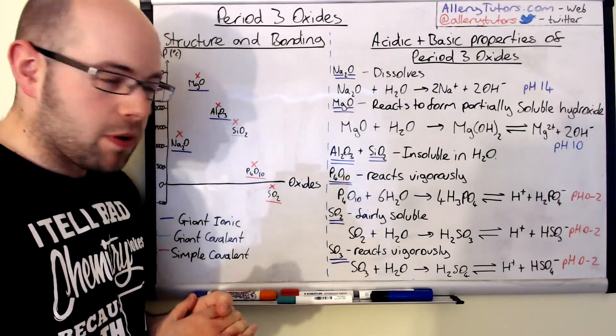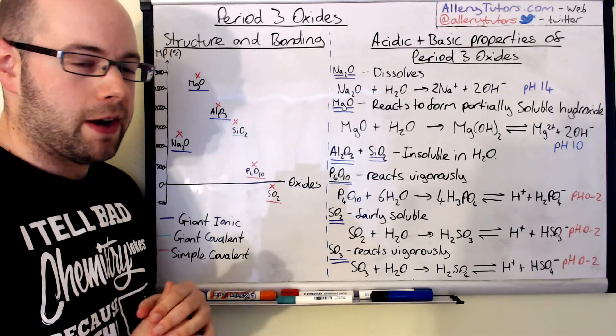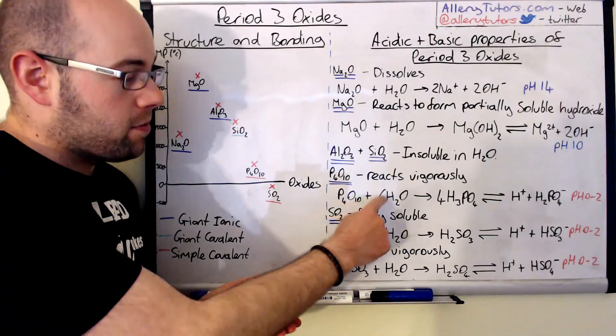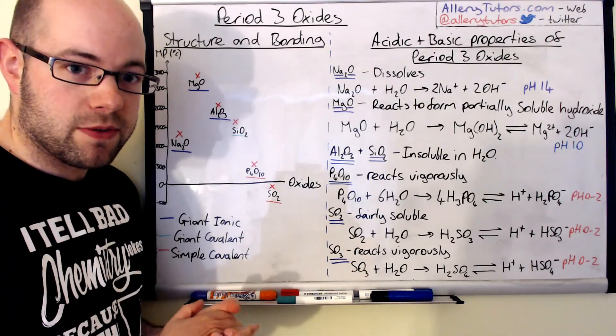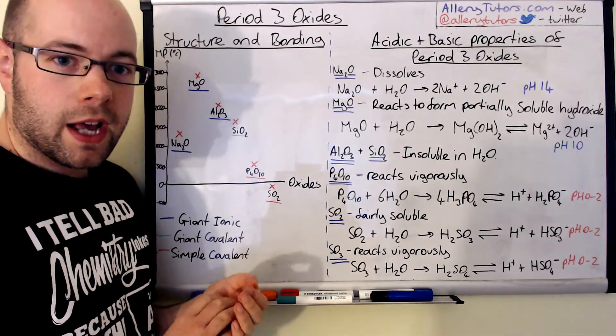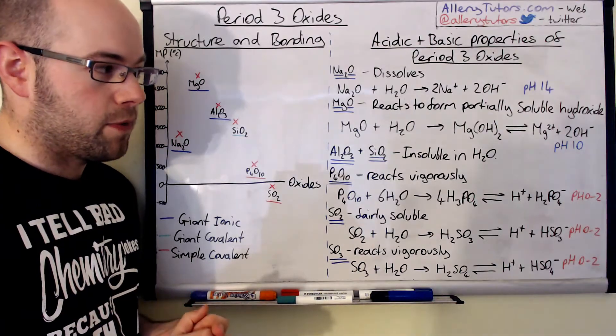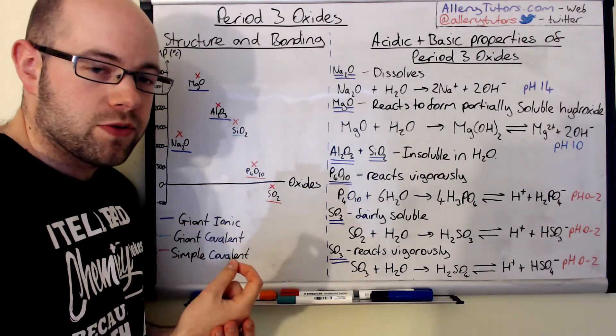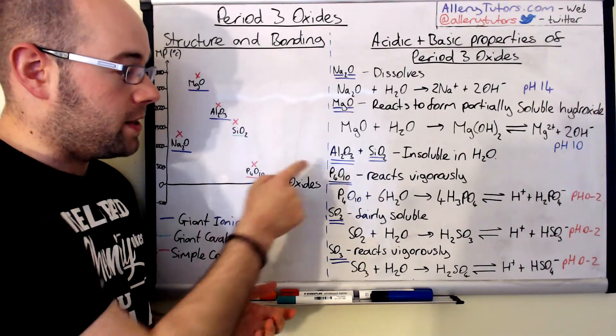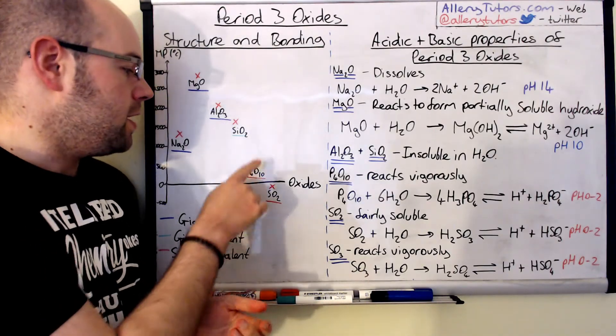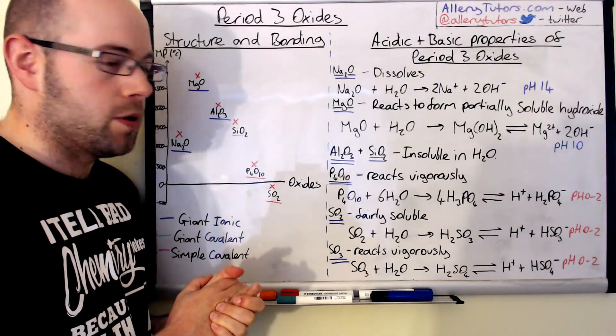If we go on to our next one which is phosphorus oxide. Phosphorus oxide reacts vigorously with water, very reactive. And it will react with water to form phosphoric acid which is H3PO4. Now phosphoric acid will dissociate to form H plus ions and H2PO4 minus. This is strongly acidic and has a pH of somewhere between 0 and 2. And this is a non-metal remember, this is a simple covalent molecule which is P4O10.